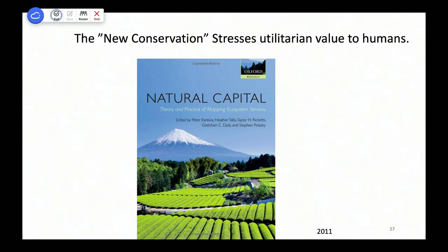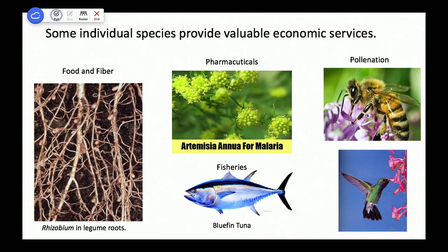The book Natural Capital, by Peter Kareiva, Gretchen Daily, and Steve Polasky, is a good example of the new conservation. These are the most prominent people in the movement — Kareiva was the Nature Conservancy's chief scientist, Gretchen Daily holds an endowed chair at Stanford and runs the Natural Capital Project, and Steve Polasky is one of the few economists in the National Academy of Sciences, a well-known environmental economist. These are heavy hitters writing about natural capital and new conservation.